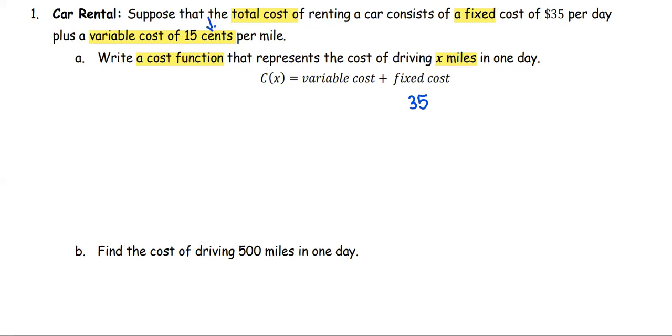Notice that this is the unit in cents, so we're going to make it in the same unit as dollars, which is $0.15 per mile. How many miles? x miles. So $0.15 multiplied by x plus $35 is the cost function that we are looking for.